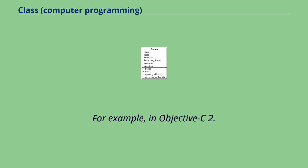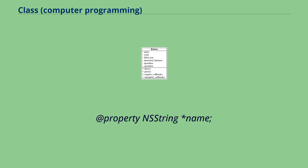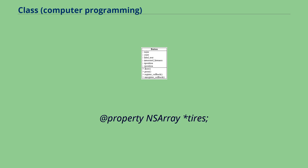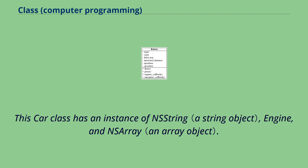If an enclosing object contains component instances by value, the components and their enclosing object have a similar lifetime. If the components are contained by reference, they may not have a similar lifetime. For example, in Objective-C 2.0, an interface Car (NSObject) might have properties for NSString name, Engine engine, and NSArray tires. This car class has an instance of NSString, Engine, and NSArray.